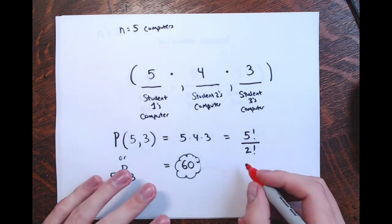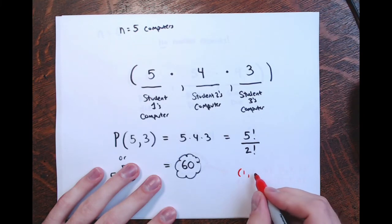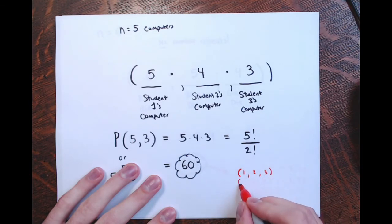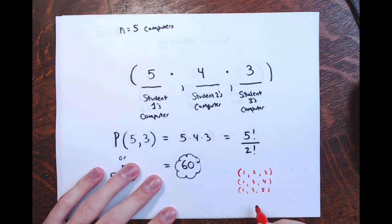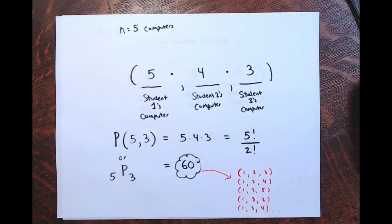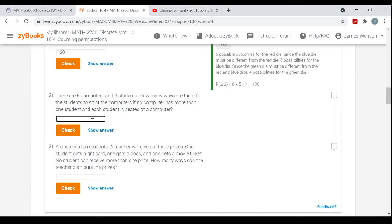Order matters because if Bob sits at computer one and Sally at computer two, that's totally different from Sally at one and Bob at two. Position matters — that's why it's counting permutations. For example, student one could be assigned computers 1-2-3, or 1-2-4, or 1-2-5, and so on. There are 60 different sequences in total. We're just asked for the number: 60.